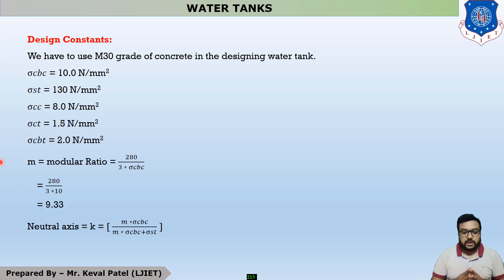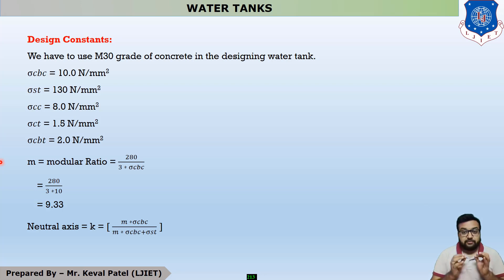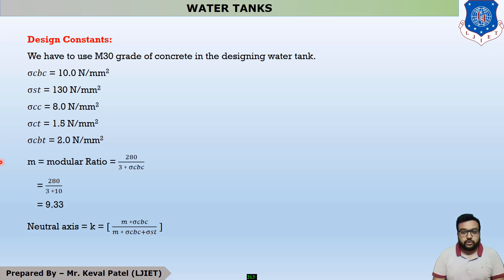The first one is modular ratio, which is denoted by small m. The equation of small m is 280 divided by 3 times sigma CBC. In the design of water tank, there are a number of concrete grades used. But whenever in the question there is no clarification regarding the concrete grade, then it is assumed that we have to use M30 grade of concrete.